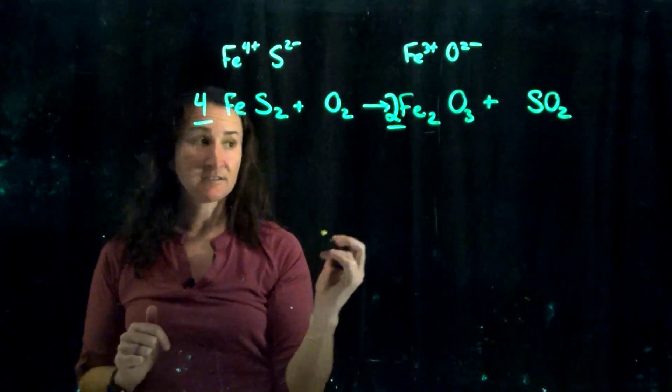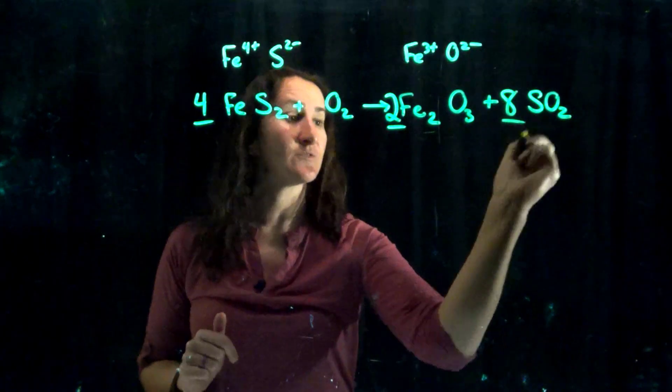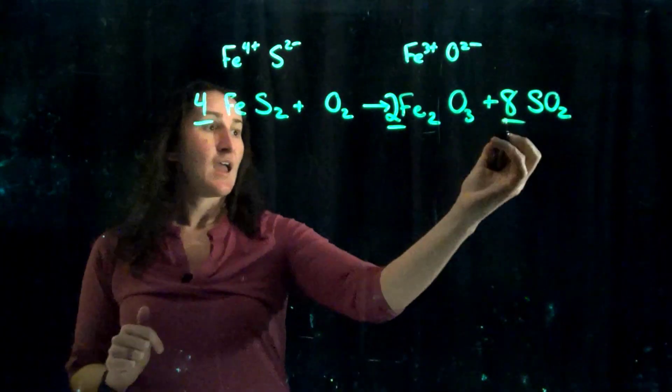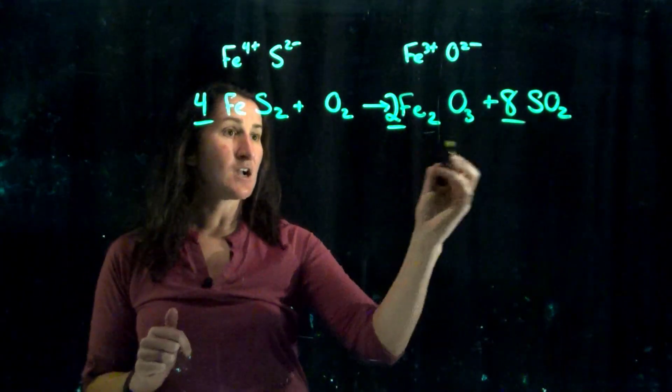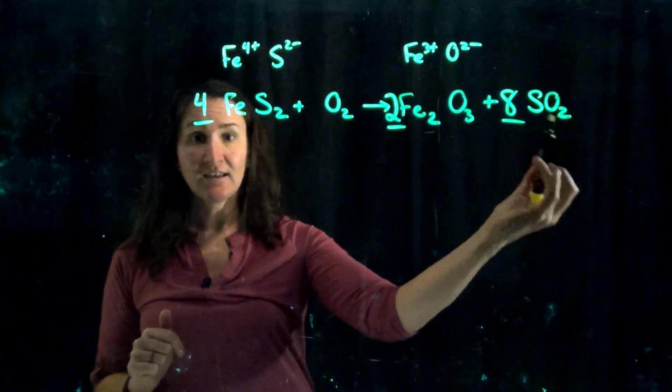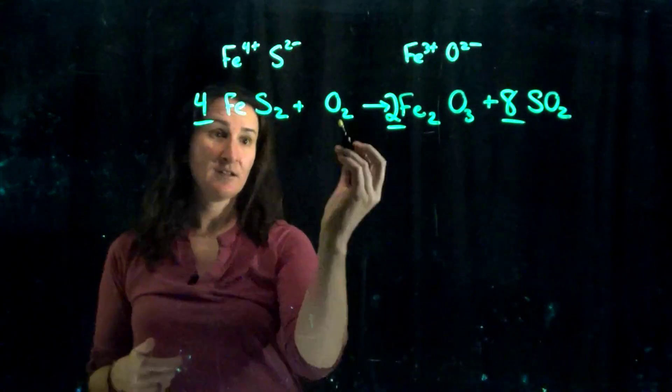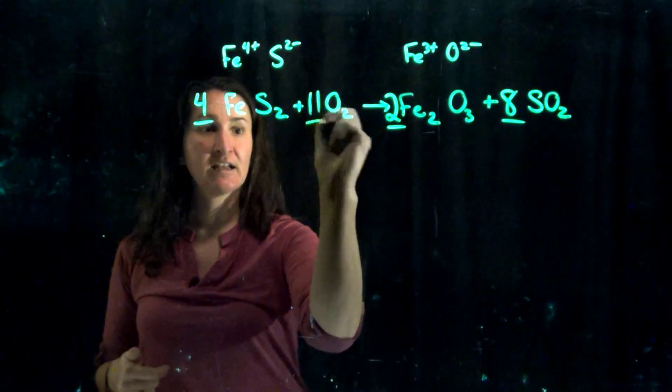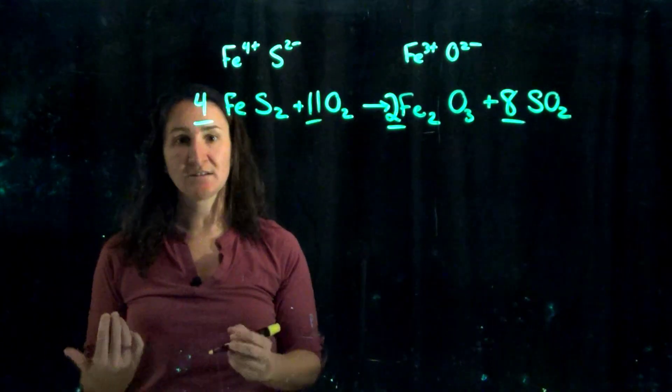That means I have eight sulfurs so I need eight sulfur dioxides, eight sulfurs here. So then how many oxygens do I have? Two times three gives me six, plus eight times two which is 16, six plus 16 is 22. If there's two of them, that means I need 11 because 22 divided by 2 is 11.